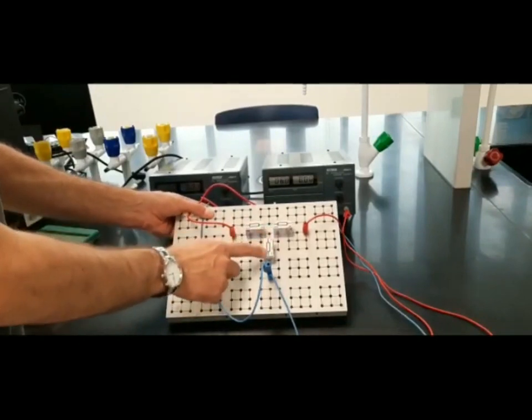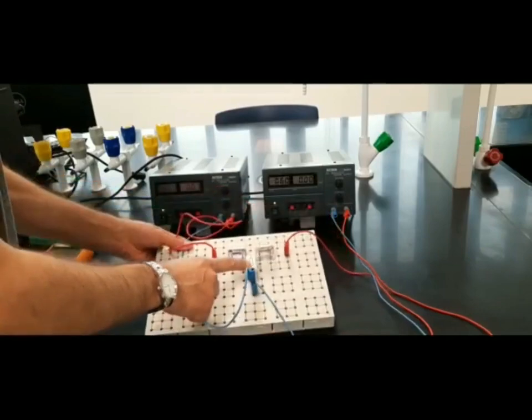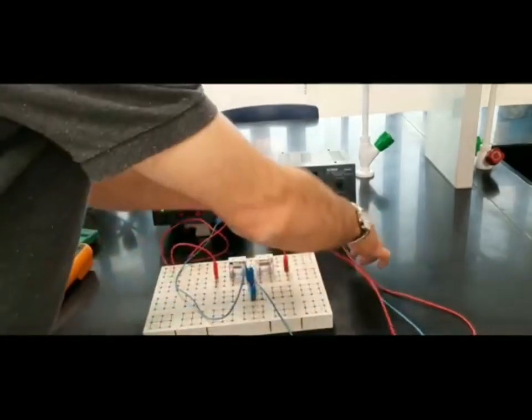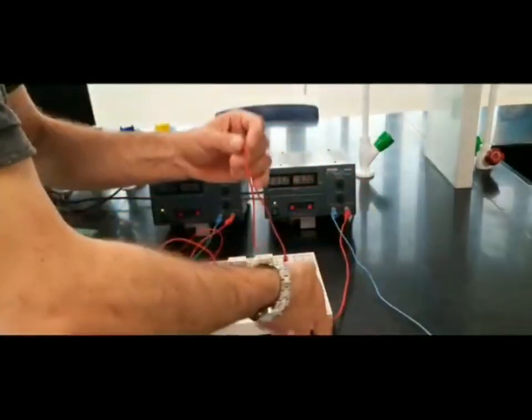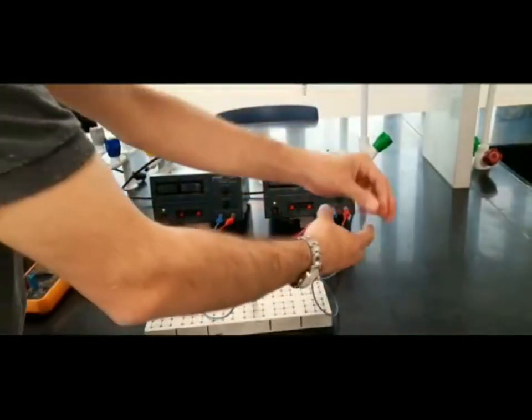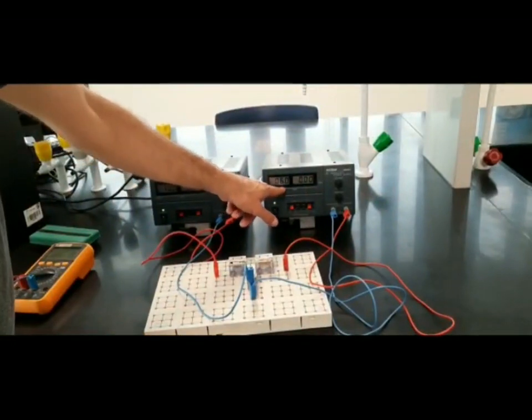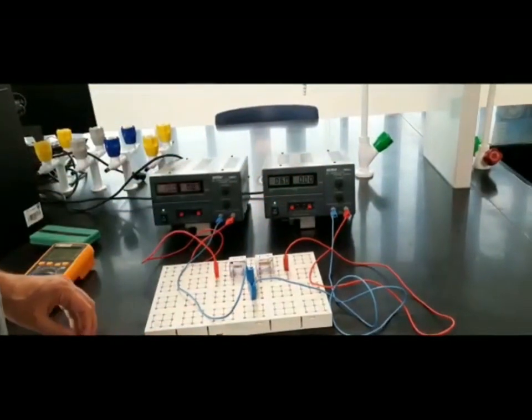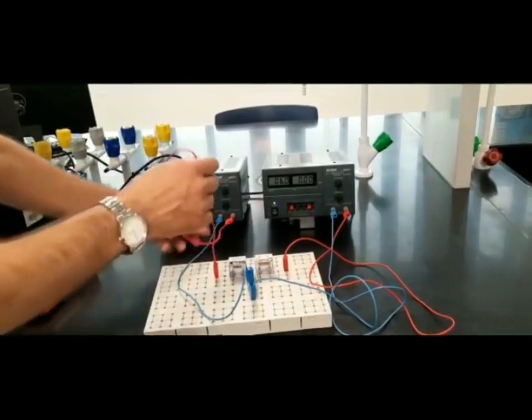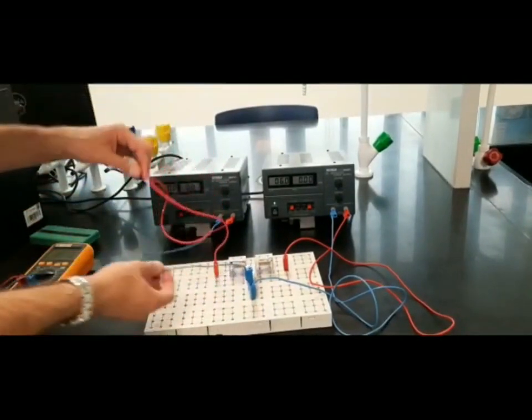This is the third resistor, 100 ohms, R3. From this side, we connected this power supply, the positive terminal up and negative terminal down, adjusted to six volts. This is the second power supply to the left, positive terminal up, negative terminal down, adjusted to 10 volts.